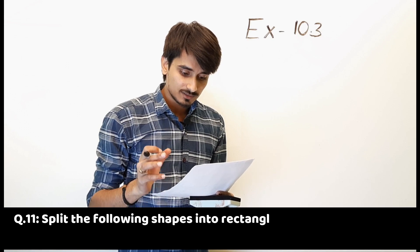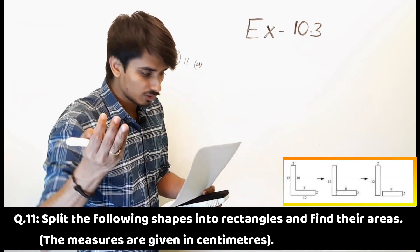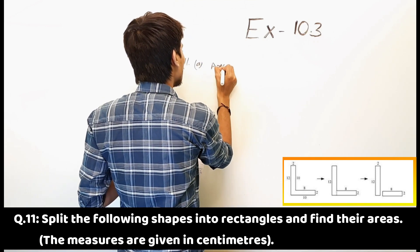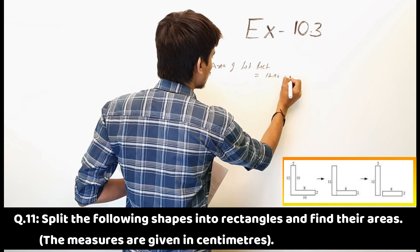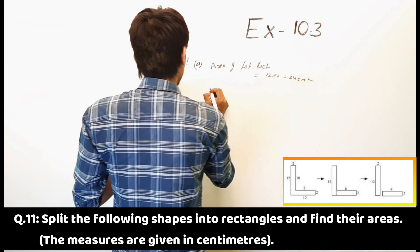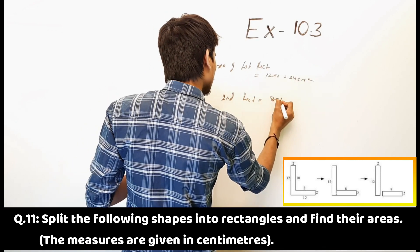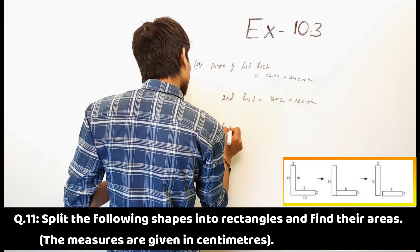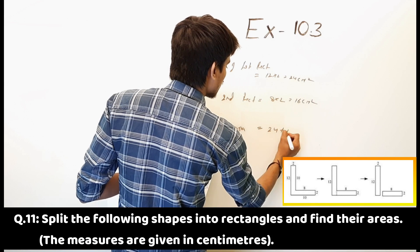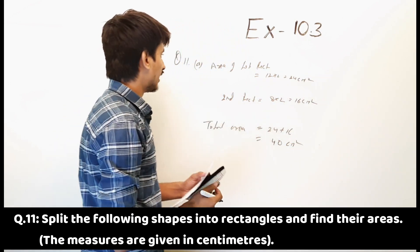Question 11: split the following shapes into rectangles and find their areas. The measures are given in centimeters. Part A: area of first rectangle is equal to 12 multiplied by 2 is equal to 24 centimeter square. Second rectangle is equal to 8 multiplied by 2 is equal to 16 centimeter square. Total area is equal to 24 plus 16 is equal to 40 centimeter square.